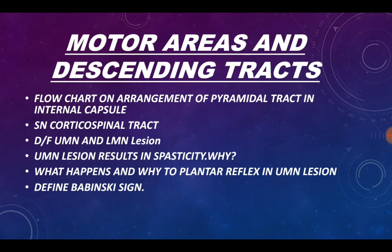Moving on to the chapter on motor areas and descending tracts. The questions framed from this chapter are: flow chart on arrangement of pyramidal tract in internal capsule is important; short note on corticospinal tract is also important; difference between upper motor neuron and lower motor neuron lesion is very important; upper motor neuron lesion resulting in spasticity is important; what happens to the plantar reflex in upper motor neuron lesion and Babinski sign are also very important.